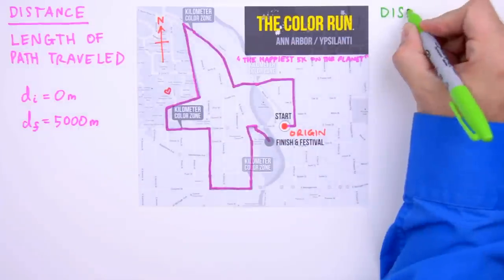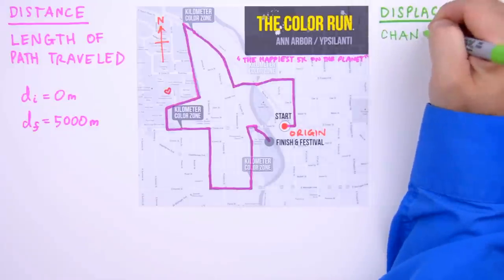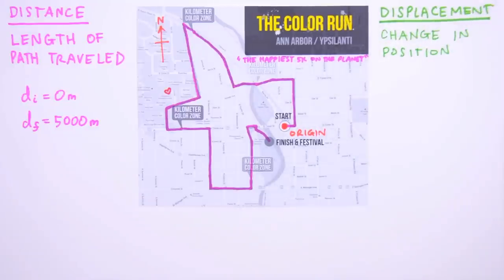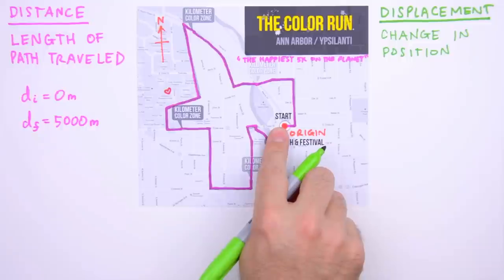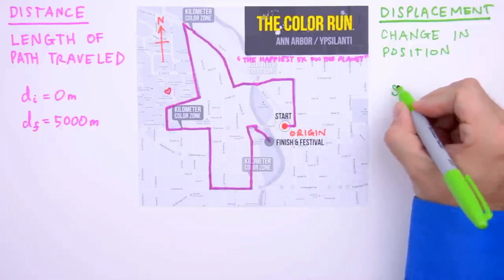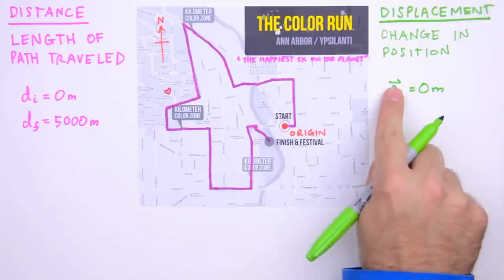Now let's look at displacement. Displacement is defined as a change in position — change in position relative to our origin. So what is the initial displacement? Because our initial position coincides with the origin, the initial displacement is 0. So S sub i equals 0 meters. Don't worry about that tiny arrow over the S — we'll get to that in just a moment.